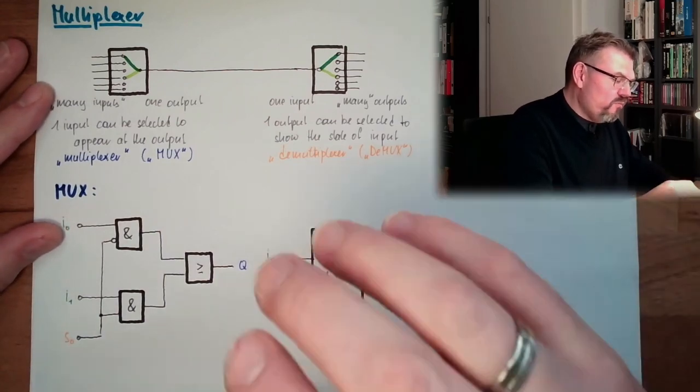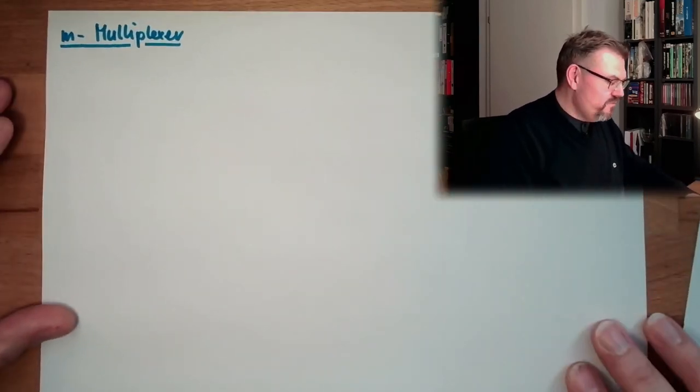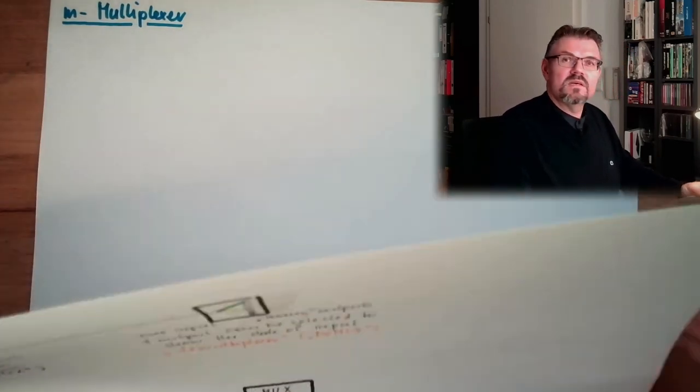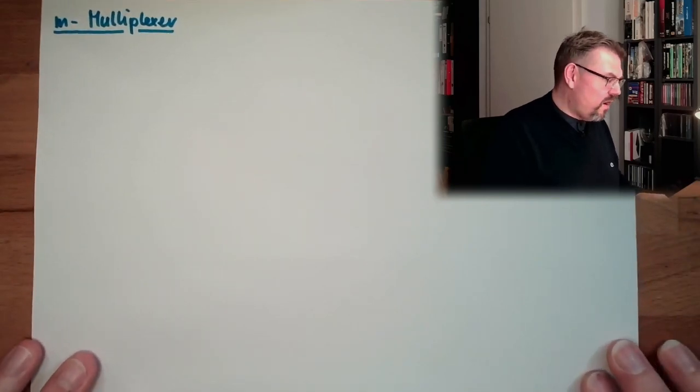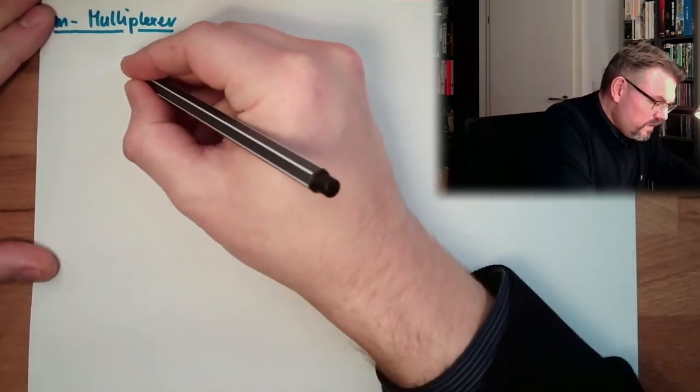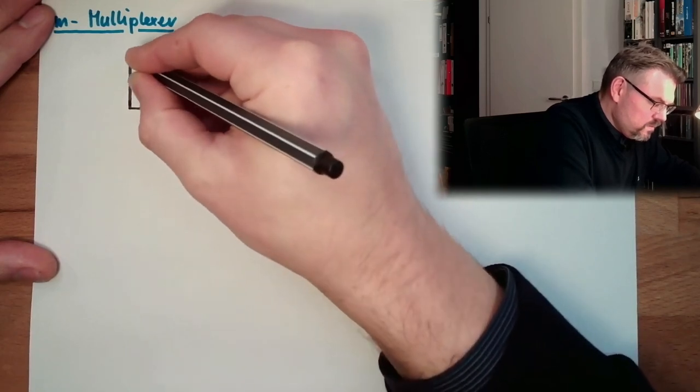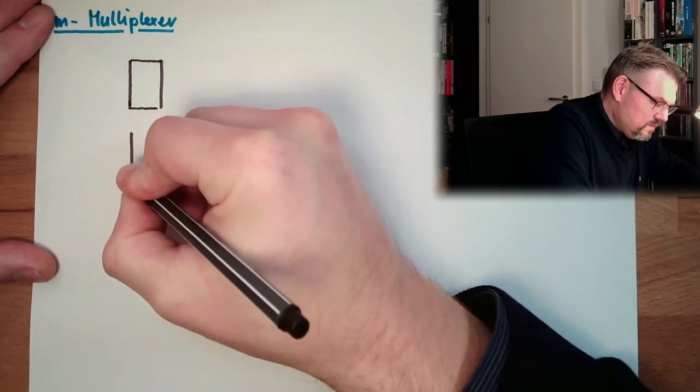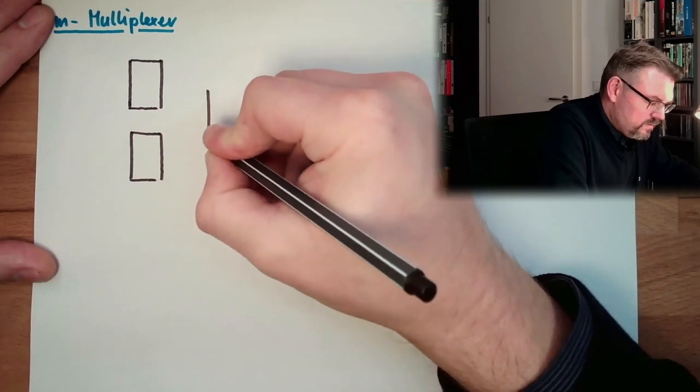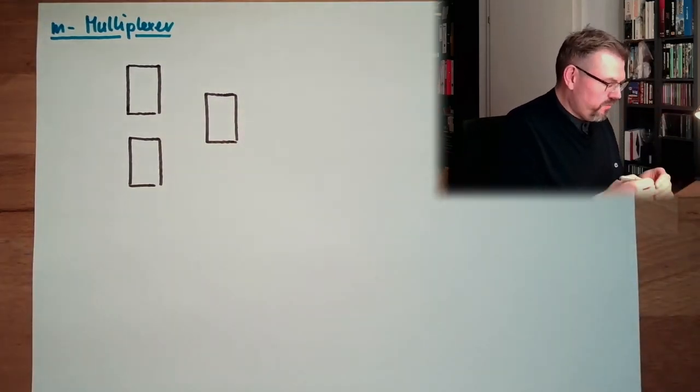How to achieve this? How to reach from one multiplexer an M multiplexer, so that we have M different inputs? Well, one possibility is use exactly those multiplexers and cascade them. So how would this look like?